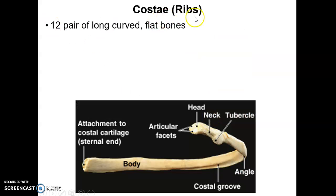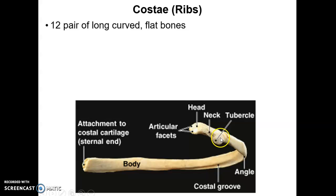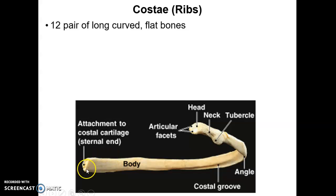Let's move on to the ribs, or costae. We have 12 pairs of these long curved flat bones. The head of each rib articulates with the two costal facets of two vertebrae, and the tubercle articulates with the costal facet on the transverse process of the vertebra. The rib then goes out laterally and swings forward, and at the anterior sternal end there is cartilage that articulates with the sternum — at least with most of the ribs.